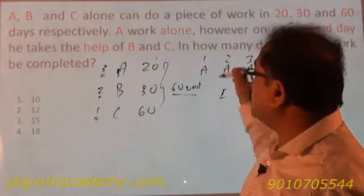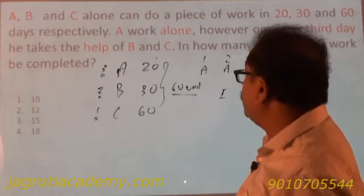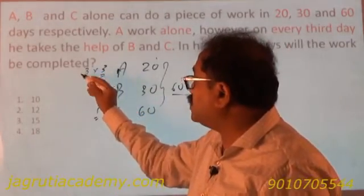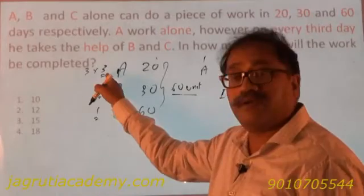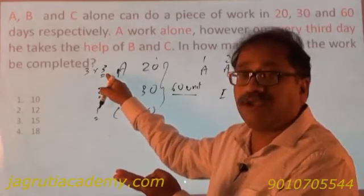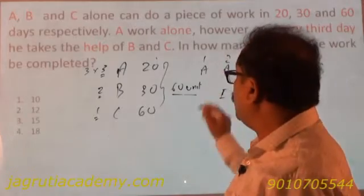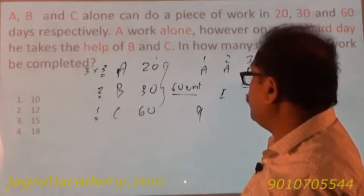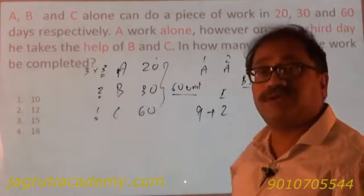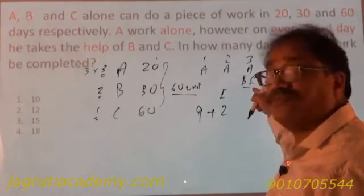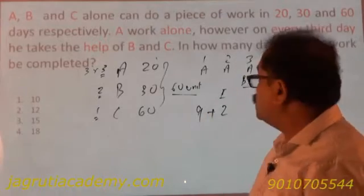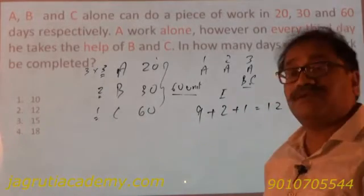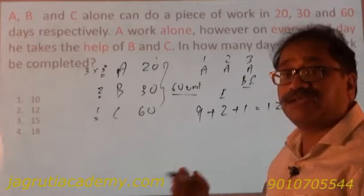A works for 3 days and then B and C each work for 1 day on the third day. If A works for 3 days at 3 units per day, he completes 9 units. B works for 1 day completing 2 units. C works for 1 day completing 1 unit. So in 1 set of 3 days, 9 plus 2 plus 1 equals 12 units of work is completed.